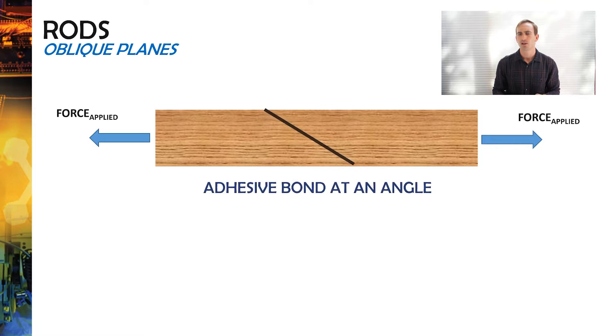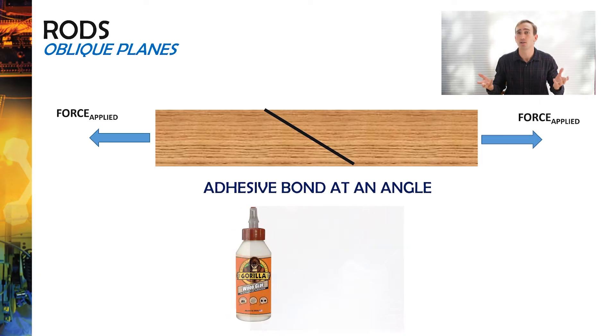But in inclined planes, we're now going to be looking at a stepped rod system where there is a weld that connects two pieces of the rod together. This weld can either be like a weld or an adhesive bond caused by glue.